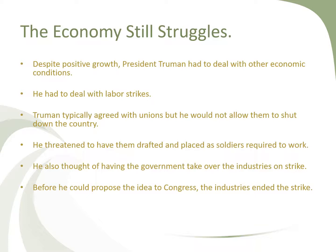Despite positive growth, President Truman had to deal with other economic conditions, including labor strikes. These strikes took place in steel, coal, and the railroads — the three major industries where strikes were occurring. Truman typically agreed with unions, but he was not going to allow them to shut down the country. He threatened to have strikers drafted and placed as soldiers required to work by the president, and he also considered having the government take over the industries. Before he could propose that idea to Congress, the industries, perhaps fearing what Truman was proposing, did end the strike.